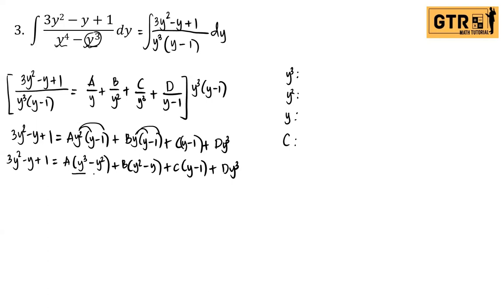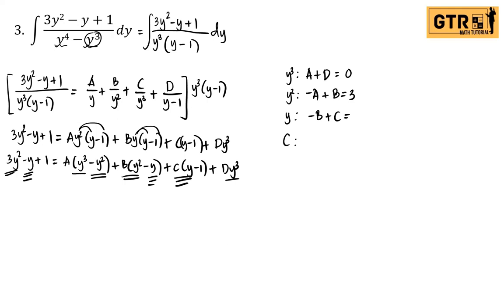For y³: A plus D equals 0. For y²: negative A plus B equals 3. For y: negative B plus C equals negative 1. For the constant: negative C equals 1, so C equals negative 1.